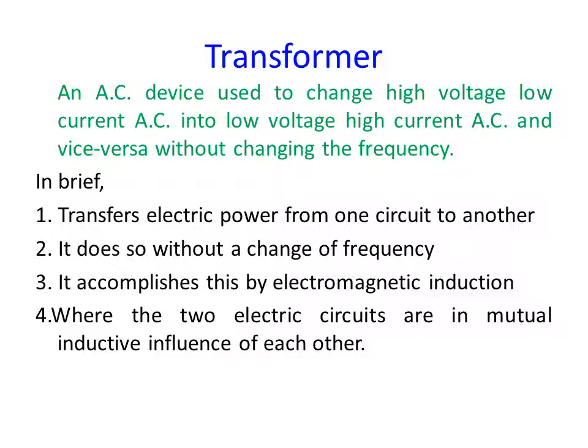In the distribution system, the power is in the form of 11 kV and this voltage is dropped to lower levels for domestic purposes. In that case, we want less output voltage on the secondary side, so a step-down transformer is used to decrease the voltage. In some applications, you want to increase the voltage at the output on the secondary side, and that is called a step-up transformer.